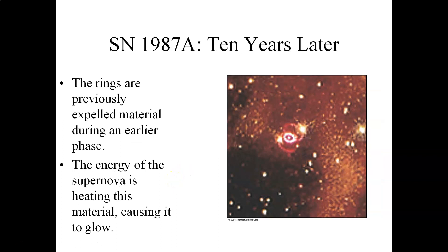10 years after supernova 1987A exploded in the Large Magellanic Cloud, the expanding material from the explosion actually slammed into some debris that was basically expelled off of the star during an earlier portion of its life stage, resulting in these glowing rings of material. The energy of the supernova is heating this material, causing it to glow.